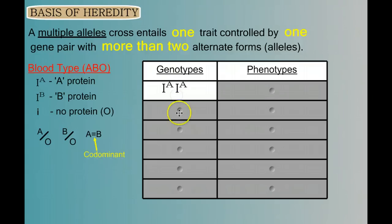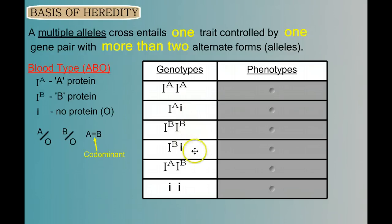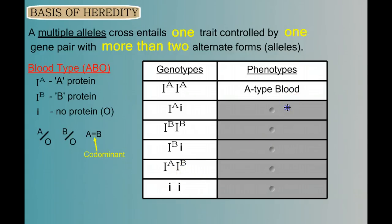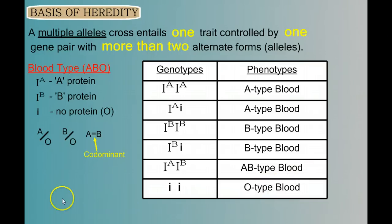The possible genotypes are: two A alleles, an A allele with an O allele, two B alleles, a B allele with an O, the A and B allele together, or two O alleles. The corresponding phenotypes are: A type blood, A type blood, B type blood, B type blood, AB type blood where both proteins are shown, and finally O type blood.